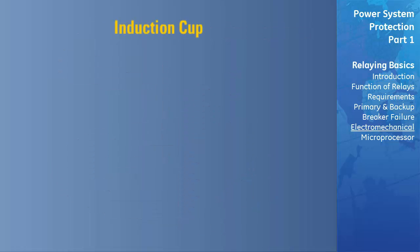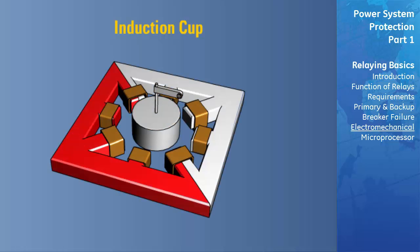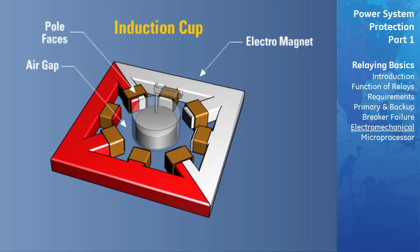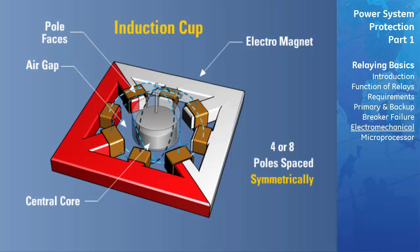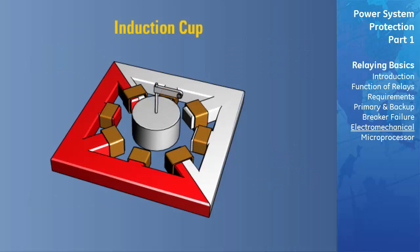The induction cup element consists of a metallic cylinder with one end closed like a cup. The cup rotates in an annular air gap between the pole faces of electromagnets and a central core. The induction cup unit uses four or eight poles spaced symmetrically about the circumference of the cup. Due to the low inertia of the rotating parts of the relay, this style is capable of high-speed operation. Hence, it is used for functions requiring instantaneous operation. The multiplicity of poles also permits measurement of more than one electrical quantity.